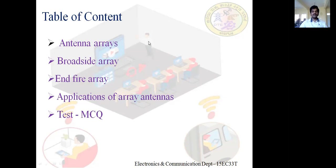Half power beam width is the angular separation between two points where the power emitted by the antenna is half of the maximum value. Bandwidth is the range of frequencies over which the antenna can work satisfactorily. These are the things we learned in the last class. In today's class, we will learn about what are antenna arrays, the classification of antenna arrays, and some applications of antenna arrays. At the end of this session, we will have some MCQs to test our knowledge.